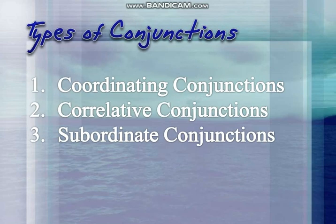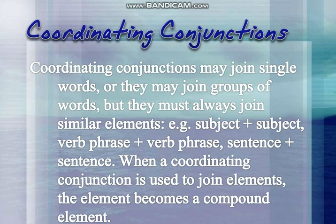We have three types of conjunctions: coordinating conjunctions, correlative conjunctions, and subordinate conjunctions. Let's discuss them one by one.